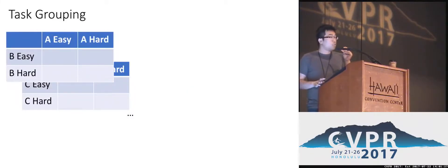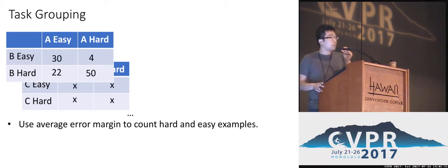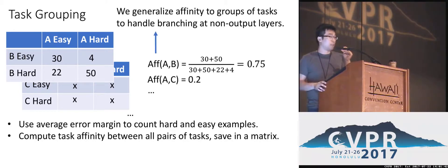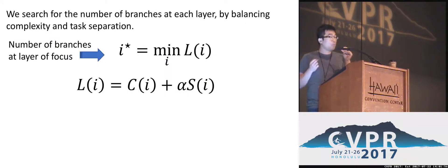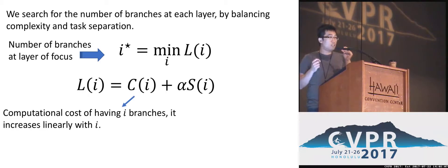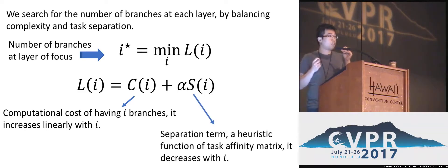For task grouping, we keep track of which examples are difficult and easy for each task. We count how many times an image is counted as both difficult and easy for a pair of tasks, giving us a notion of task affinity. Using that information, we create a task affinity matrix and perform spectral clustering to group tasks together. We then answer how many branches to create by solving an objective function containing a complexity term that increases with the number of branches and a separation term that encourages grouping of similar tasks.